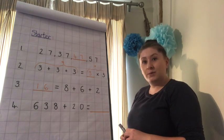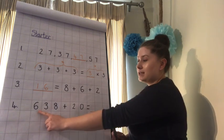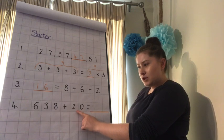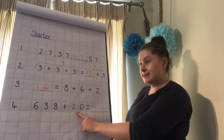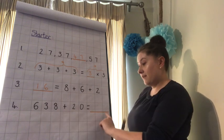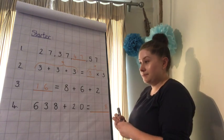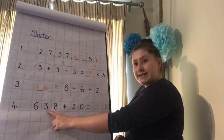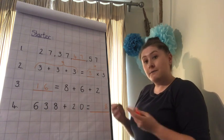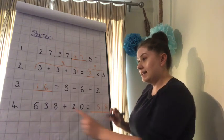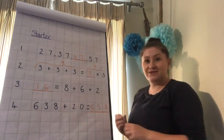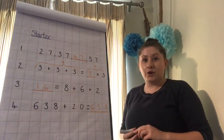Next question. Let's see if we can do this one mentally. 638 add 20. We're adding 20 to it, which is two tens. So our ones digit isn't going to change — we know we're going to have 8 in our ones digit. Three tens, but we're adding two tens to it, so we know it's going to have now five tens. Our hundreds hasn't changed. So we've got the answer of 658. Give them a tick if you've got them right. Well done.